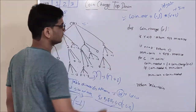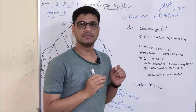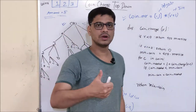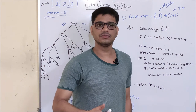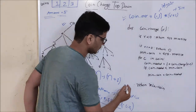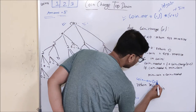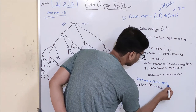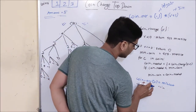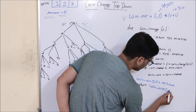My table is ready. What is my next task? I am going to edit this particular code and make it a top-down code. To do that, whenever we are returning a value, we are going to first save it in the memo table and then return. So coinR[V] is equal to min_coin. We have saved it in the array, and after that we return coinR[V].